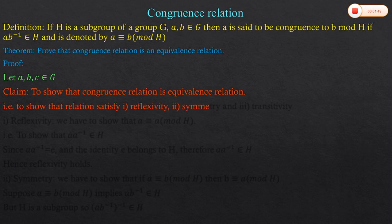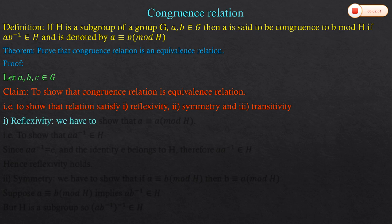An equivalence relation means the relation must satisfy reflexivity, symmetry, and transitivity. Now, reflexivity — reflexivity का मतलब होता है कि एक element खुद के साथ उस relation में रहेगा (reflexivity means an element will be related to itself).